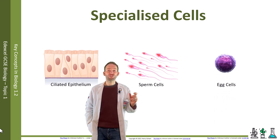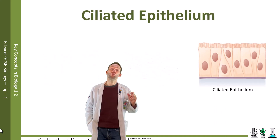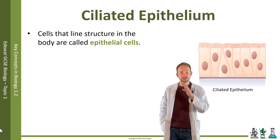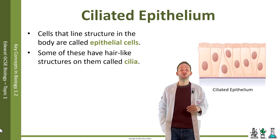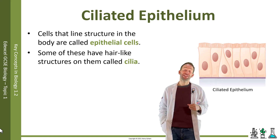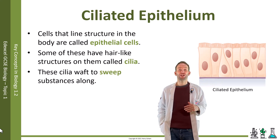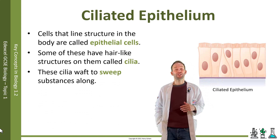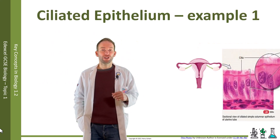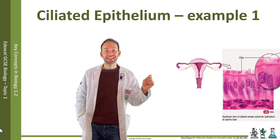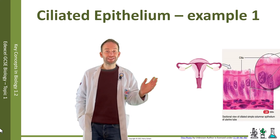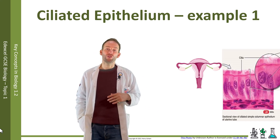Cells that line structures in the body are called epithelial cells. Some of these have little hair-like structures on top of them, which we call cilia. These cilia waft to sweep substances along inside these structures. One example is in the oviduct — a tube that leads an egg cell from the ovary down into the uterus — and the cilia help waft that egg along that tube.